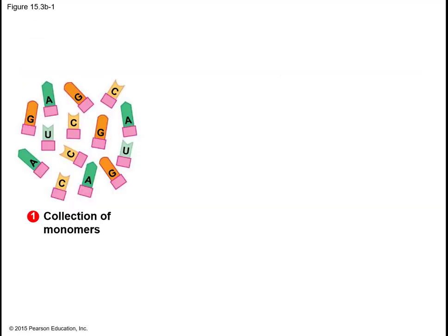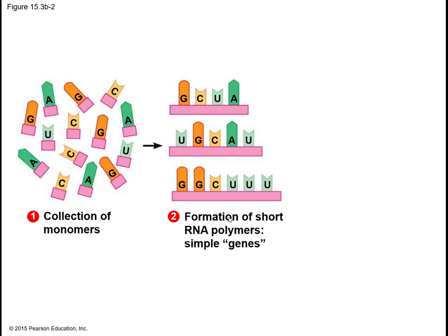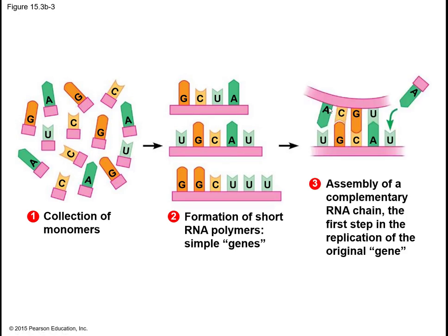Here is a collection of RNA monomers — we know they're RNA nitrogenous bases because we see the U for uracil, which replaces thymine in RNA. These monomers have grouped together to form polymers or simple genes. We can see complementary monomers teaming up: adenine matches with uracil, and cytosine always matches with guanine.